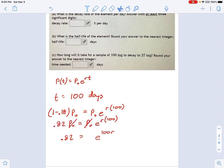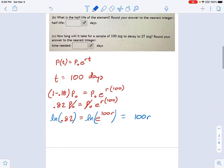Okay, so I'm going to move that guy over, make some room for a log. And there we go, natural log. And this thing is going to turn very nice on the right side. It's going to be just 100R, the natural log and the E cancel each other out. So if I want rate, it's just going to be 1 over 100 times the LN of 0.82. And that'll be my rate, my decay rate per day.